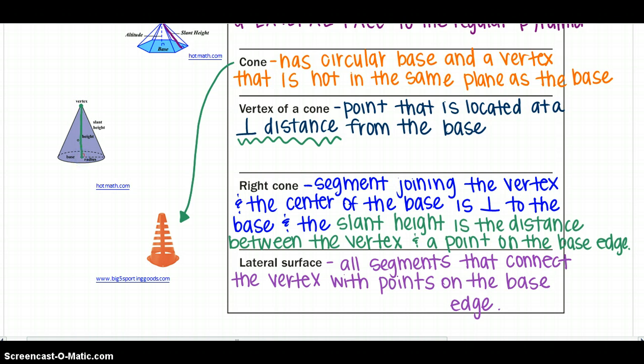A right cone is formed by segments joining at the vertex and the center of the base is perpendicular to the base. Again, a lot like that vertex, and the slant height is the distance between the vertex and the point on the base edge. So again, looking at kind of how a hill looks, the hill is slanted or my car is slanted going down the hill. So I'm looking at that height, and lateral surface will tell us that all the segments that connect the vertex with the points on the edge, so it's almost like a curved surface because those slant heights have to be touching the base of the cone.